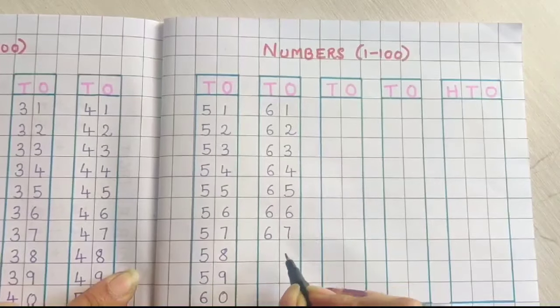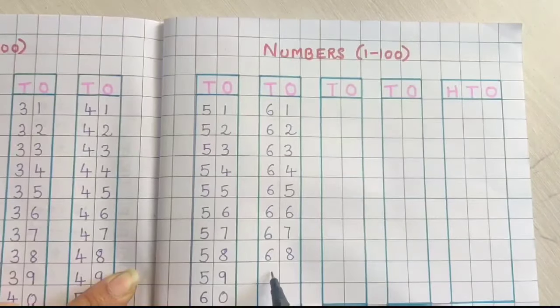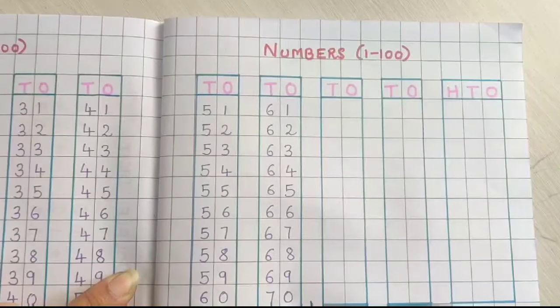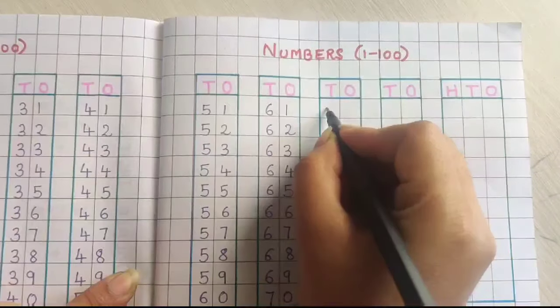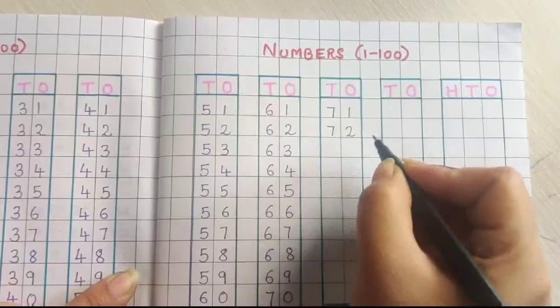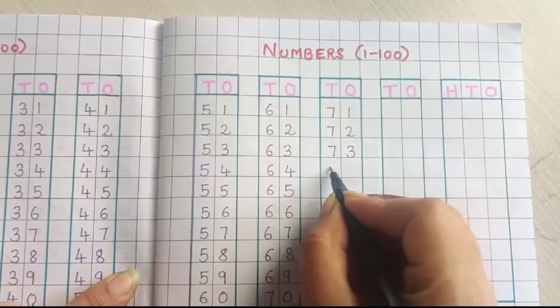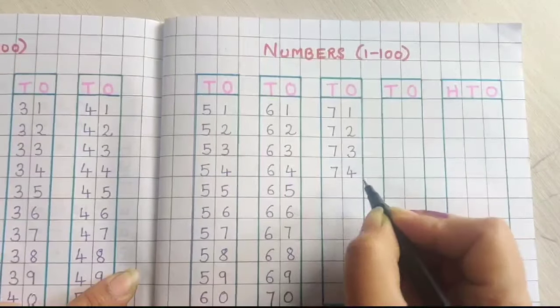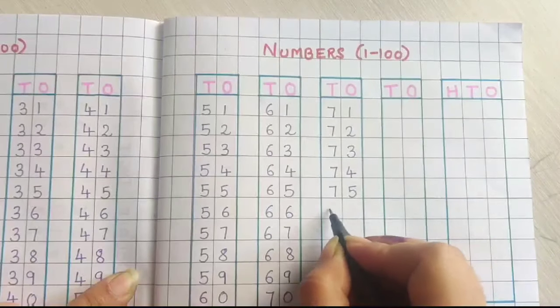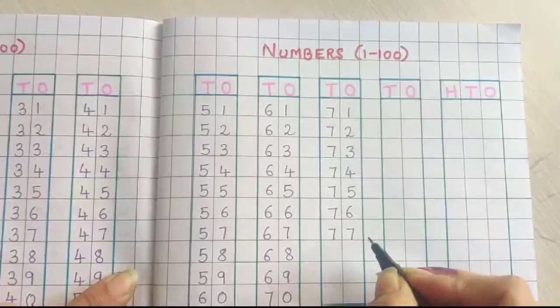67. 68. 69. 70. 71. 72. 73. 74. 75. 76. 77.